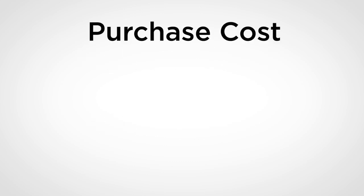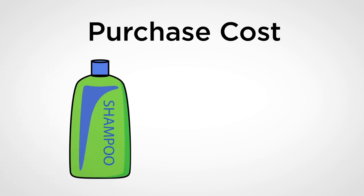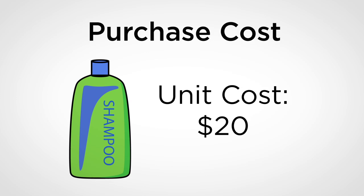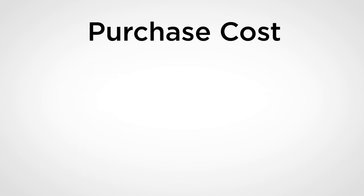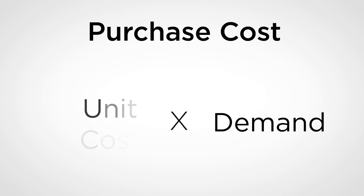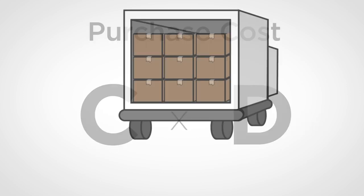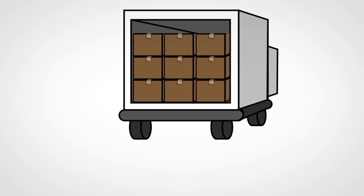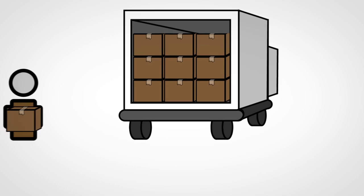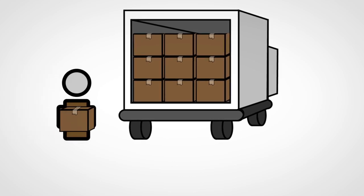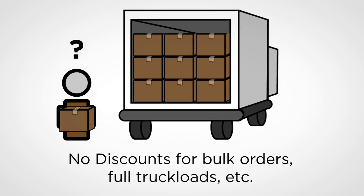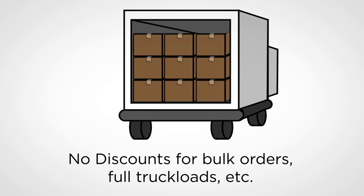The third type of cost is the purchase cost, or unit cost, incurred in purchasing or producing a unit of inventory. Since our goal is to serve D units of annual demand and assuming each unit costs C dollars per unit, the total annual purchase cost is C times D. The total purchase cost is independent of the order policy and does not impact the order policy unless we consider bulk discounts. For simplicity, we ignore any bulk discounts and full truckload discounts, and can safely ignore unit purchase costs as far as order policy is concerned.